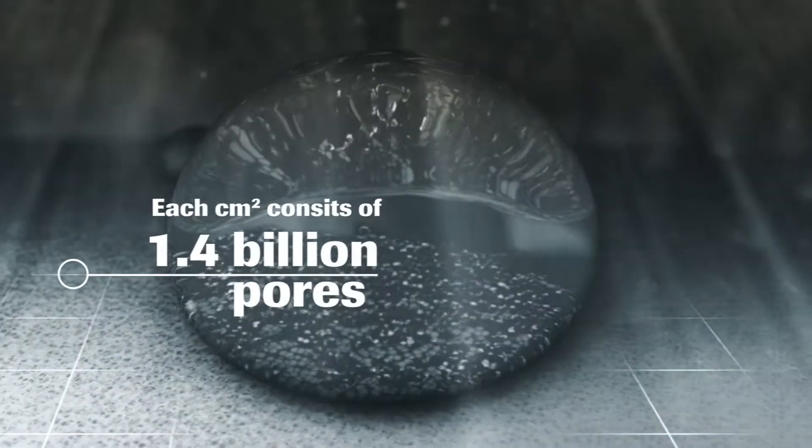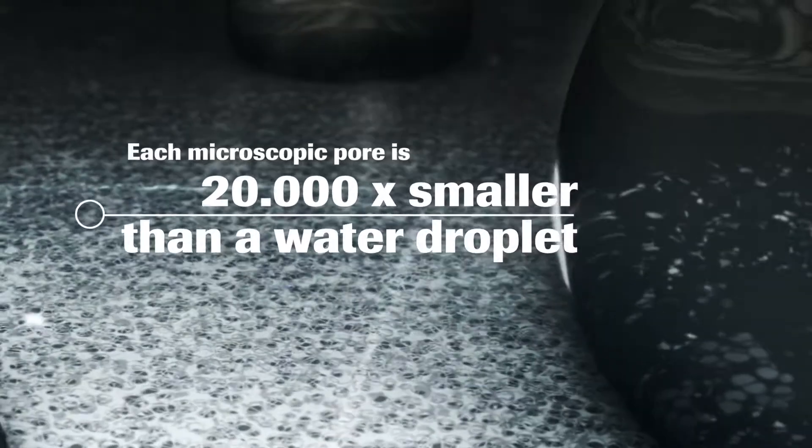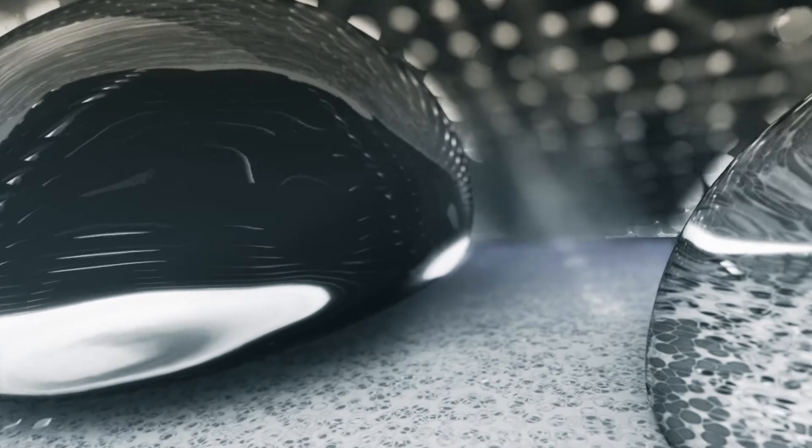Each square inch of a Cortex membrane contains 9 billion pores. Each microscopic hole is 20,000 times smaller than a water droplet, making it impossible for rain, snow, and sleet to enter.